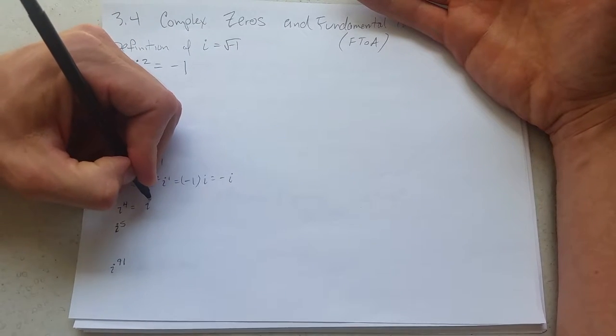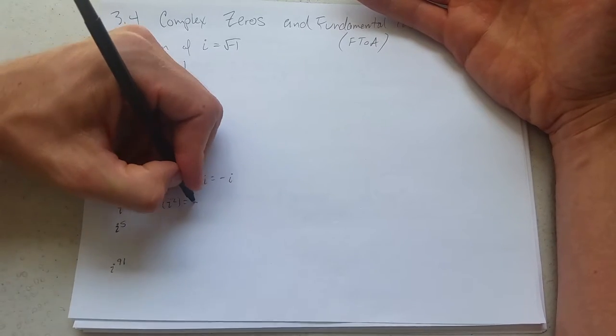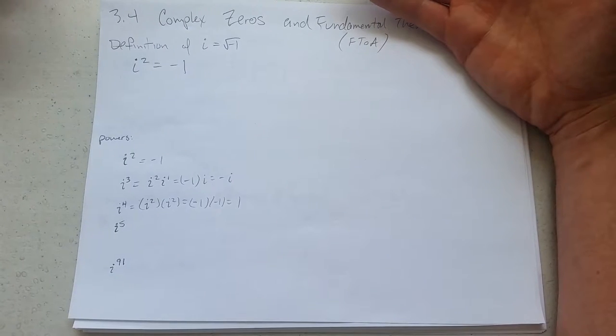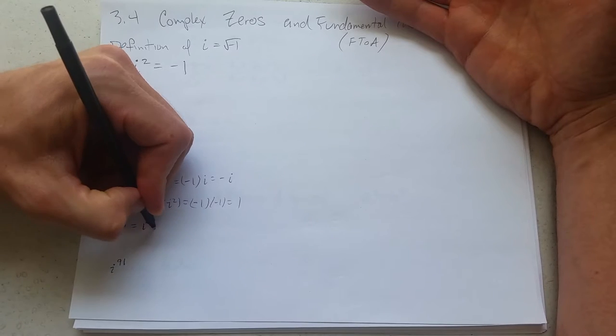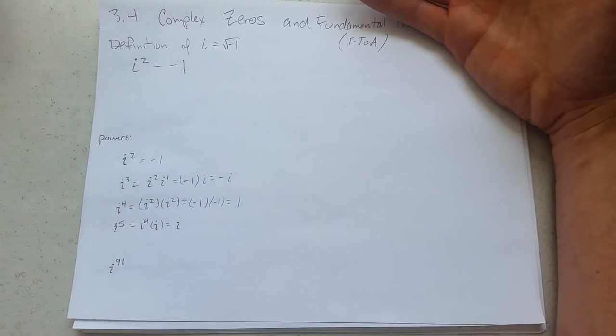i to the fourth. You can write that as i squared times i squared. Negative 1 times negative 1 equals positive 1. And i to the fifth, that's i to the fourth times i. i to the fourth is 1, so this is just i.